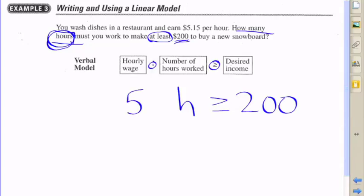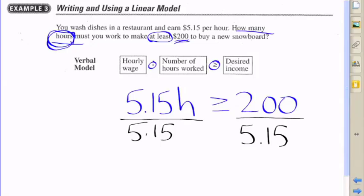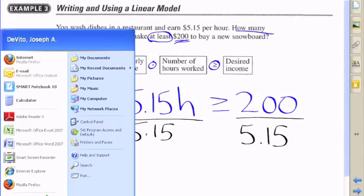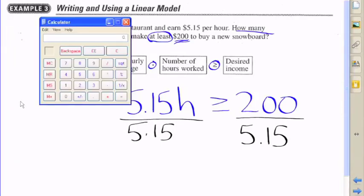Basically, $5.15 times however many hours you need to work will determine how many hours you would need to work in order to make that $200. So $5.15 times the number of hours should be at least equal to 200.